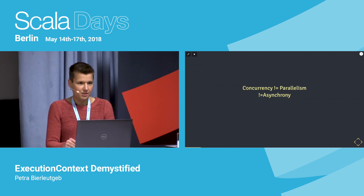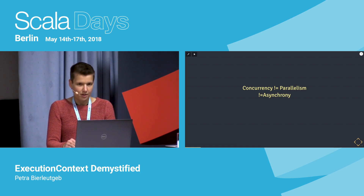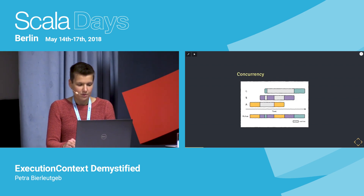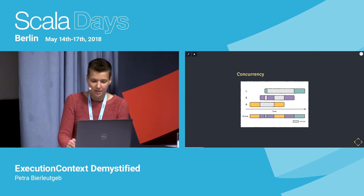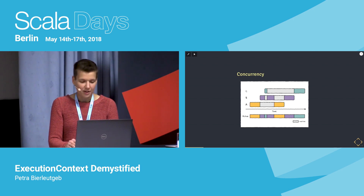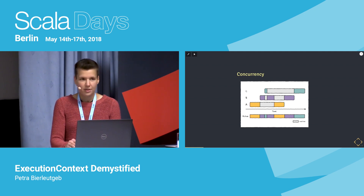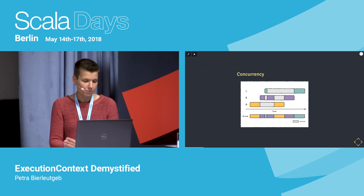Some terms that usually come up when you talk about concurrency are also the related terms parallelism and asynchrony. Concurrency doesn't actually mean that things happen in parallel at the same point in time. When we look at three tasks, although all of them are running at one single point in time, only one of them is active — comparable to being a single person working on three things, or having one CPU working on multiple tasks.